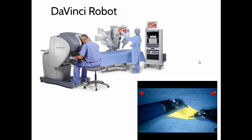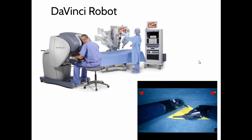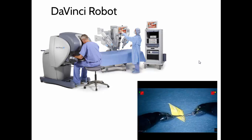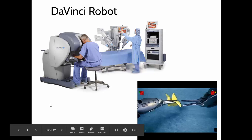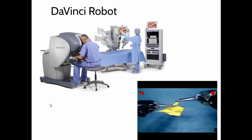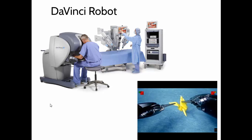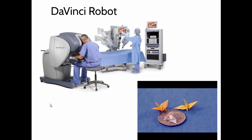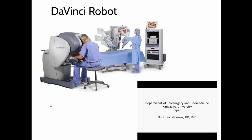My father had prostate cancer and had part of his prostate gland removed using this Da Vinci robot, so it's not only for heart surgery — it can be used for surgery all over the body. It's a way to do surgery without having to open up a person to expose their organs. This is somebody holding up a tiny little paper airplane using this Da Vinci robot. This robot can make very fine movements that even a doctor might not be able to make inside a person's body, and this robot is smaller than a dime.